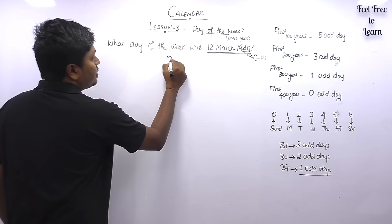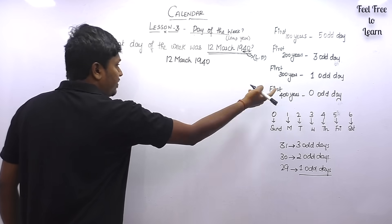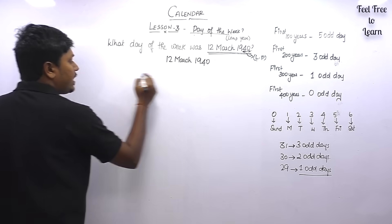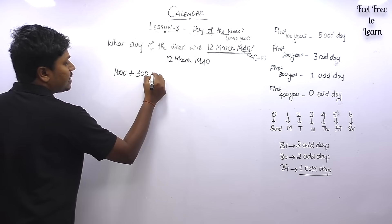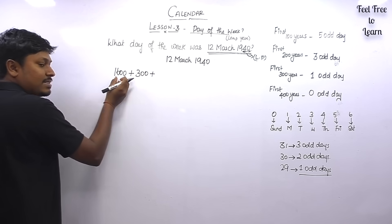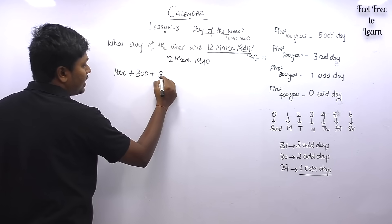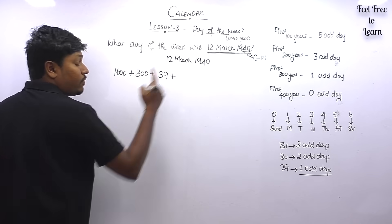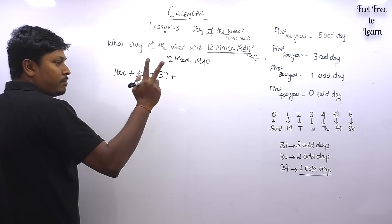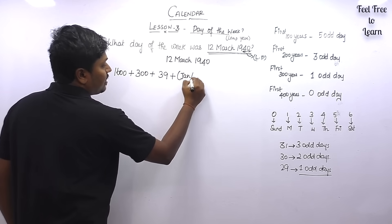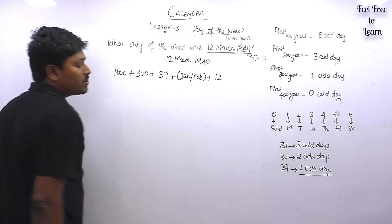We write 12th March 1940 using a base value. 1940 can be written as 1600 years plus another 300 years, giving 1900. Then we have 40 remaining years: 39 years plus the 40th year in which our target is to find 12th March. Before March we have January and February — 2 months — and in March our target is the 12th day.